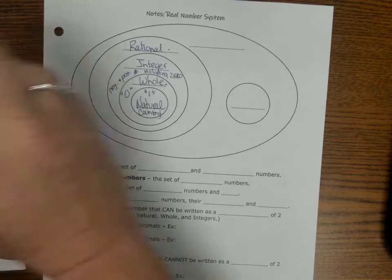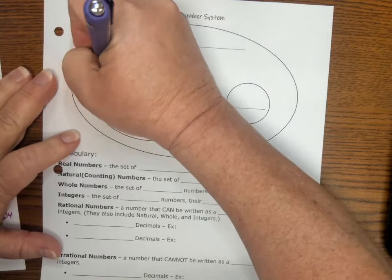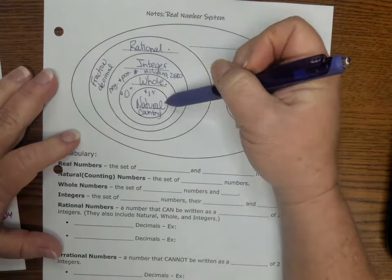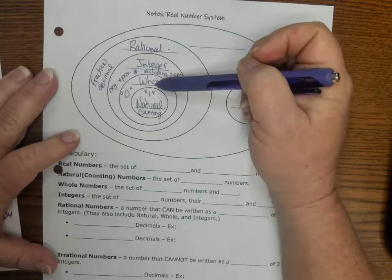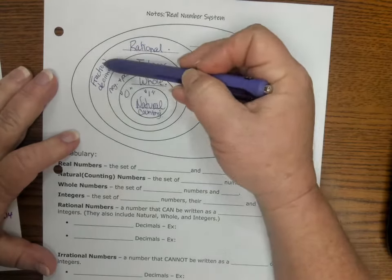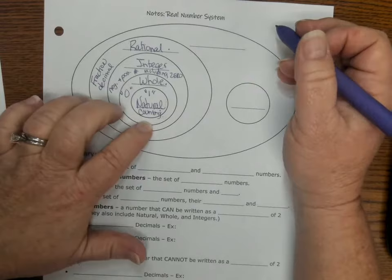Rational numbers, fractions. They added fractions and decimals. So they still include all the natural counting numbers, whole numbers, integers. But now, rational includes fractions and decimals. Now we're going to talk about those more specifically in just a minute.